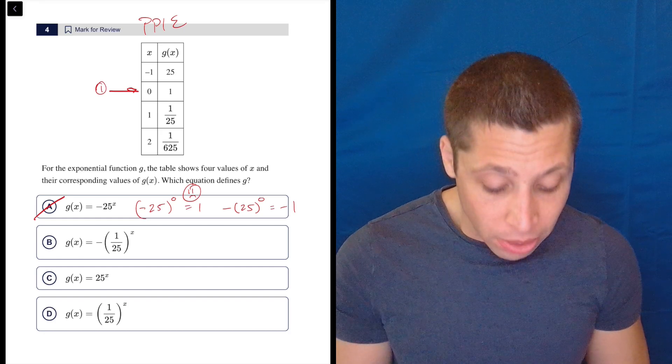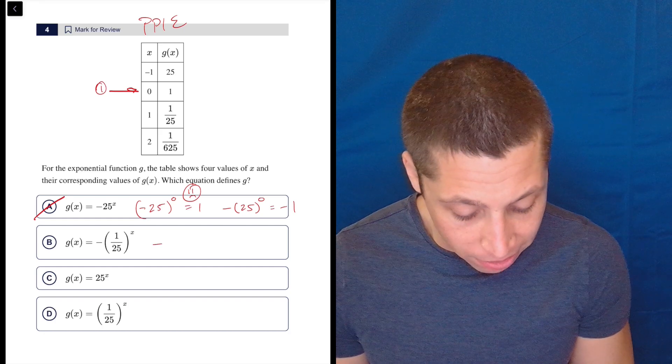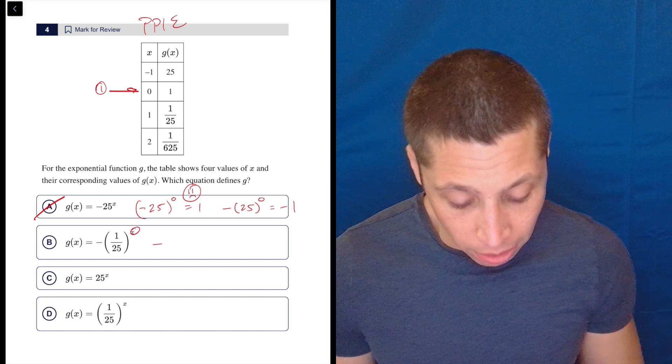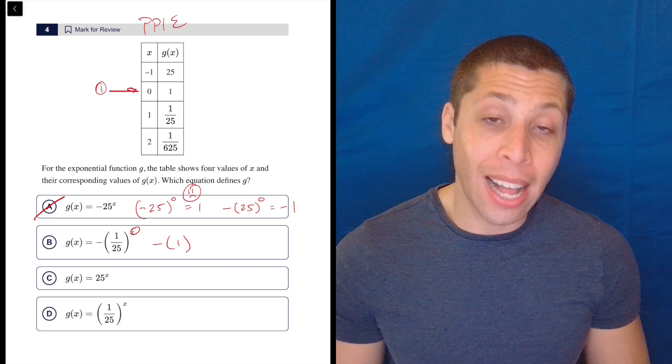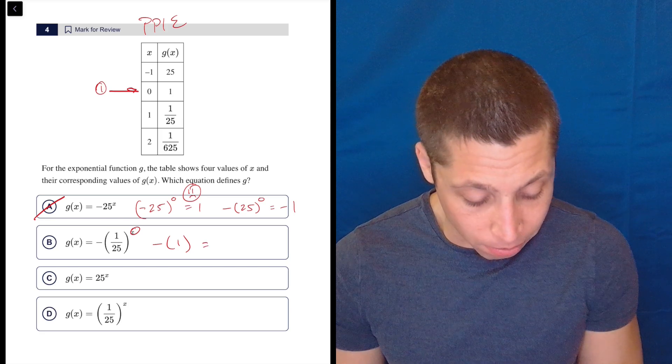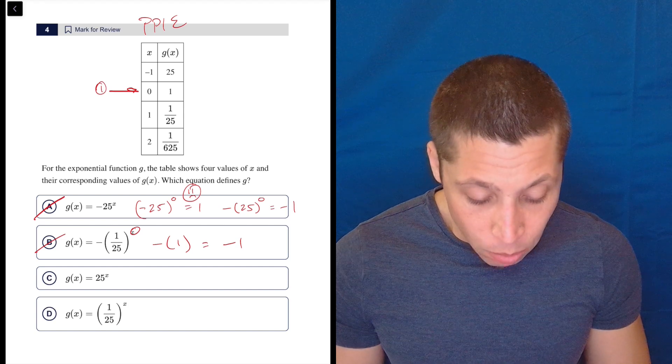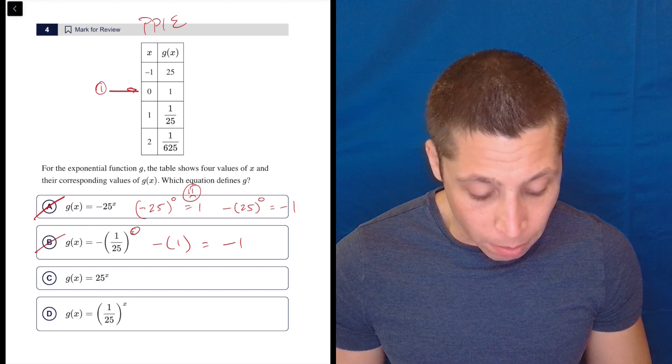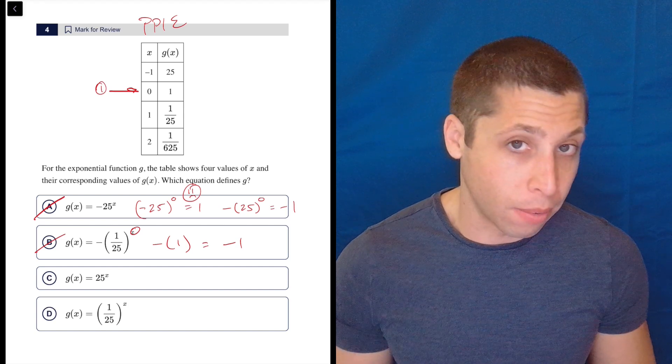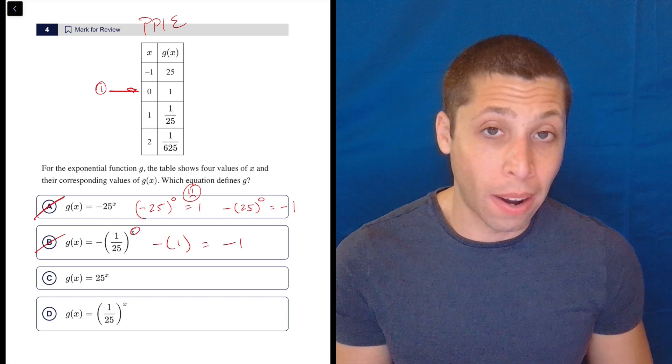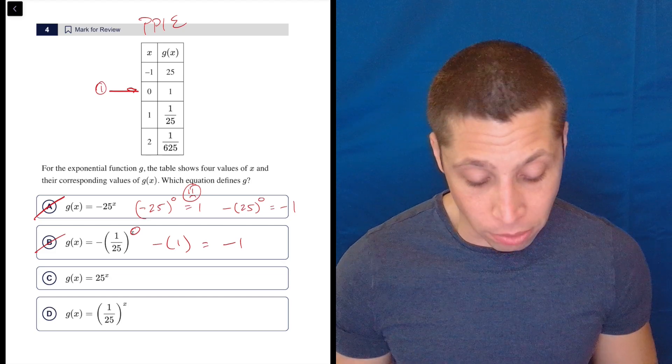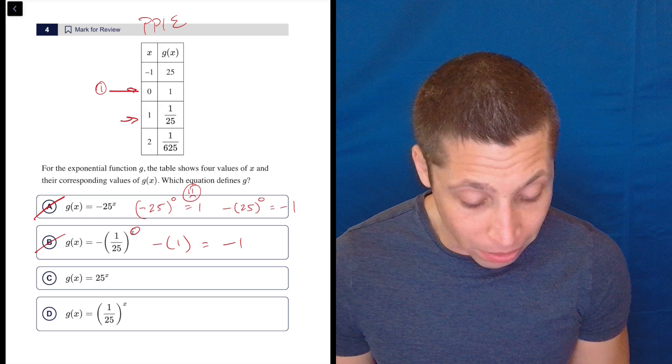And then the same thing more obviously is going to happen in choice B, right? Because negative, let's just put the zero here, negative one like that, anything to the zero is one is still not one. It's negative one. So gone. Now, if we did the same thing in C and D, we would very quickly see that we would get one in both because these are positive numbers so that negative is not going to affect things. So 25 to the zero, that's one, 125 to the zero, that's one. So let's just pick a new number and let's still be lazy.